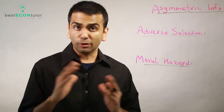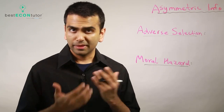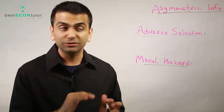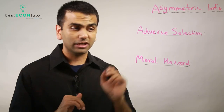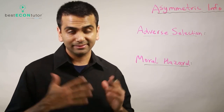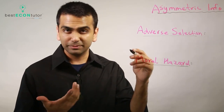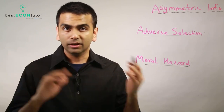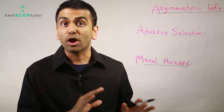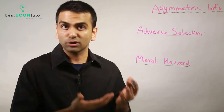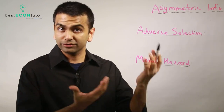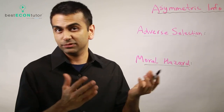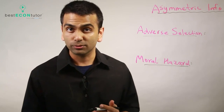There are a lot of vocab words that people really tend to confuse: adverse selection and moral hazard. Most students don't know the difference between these two. It seems like something about things going wrong, and they both are related to something going wrong when there's asymmetric information — but let's look at what the difference is and how to treat them in the real world.